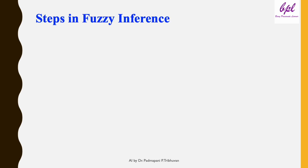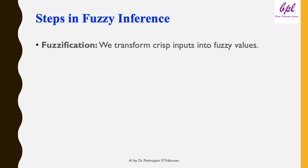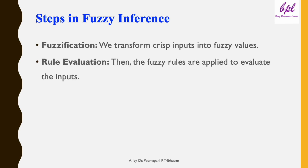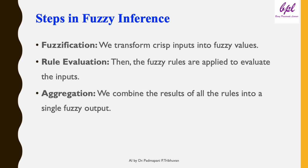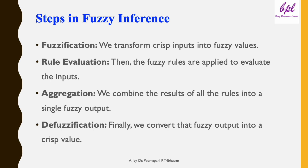The process of fuzzy inference involves four key steps: fuzzification, rule evaluation, aggregation, and defuzzification. In fuzzification, we transform crisp inputs into fuzzy values. In rule evaluation, the fuzzy rules are applied to evaluate the inputs. In aggregation, we combine the results of all rules into a single fuzzy output. Finally, in defuzzification, we convert the fuzzy output into a crisp value.